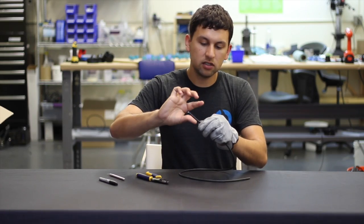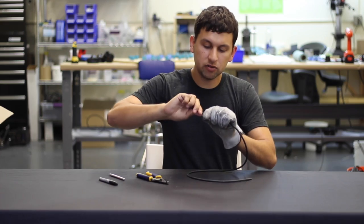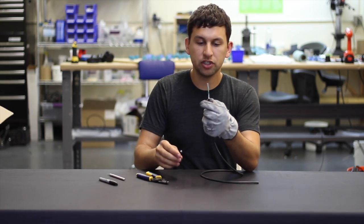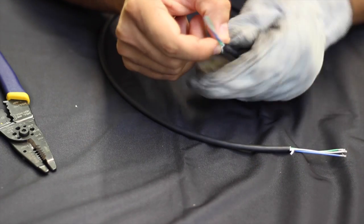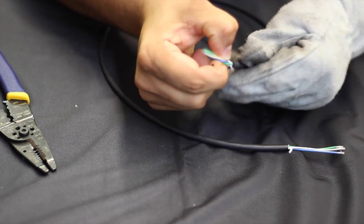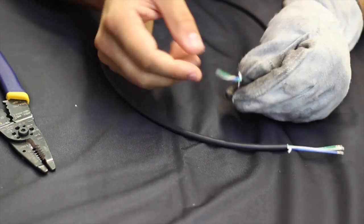Once you've got it cut on both sides, you can grab one end and grab the other, and just pull the jacket off. There will be some white tape exposed at the bottom of the conductors, and you can also just rip that off if it's still exposed.